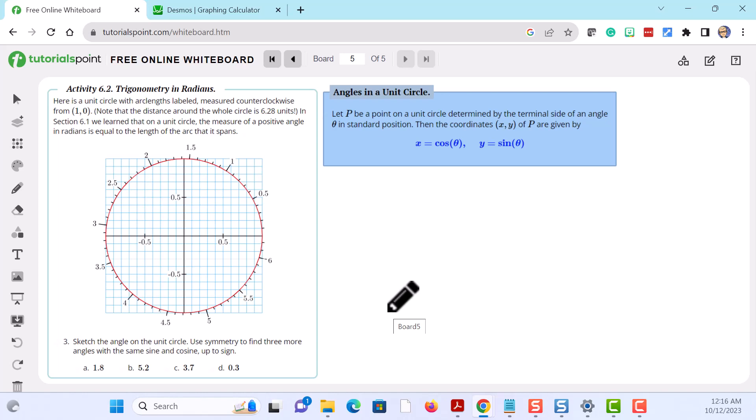In this video we're going to sketch the given angle on the unit circle and then use symmetry to find three more angles with the same sine and cosine up to sine.